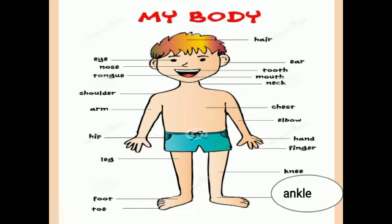This is my head. I have hair on my head. My head is on my neck — N-E-C-K, neck. My neck is on the shoulders — S-H-O-U-L-D-E-R-S. On my face, I have two eyes, two ears, one nose, one mouth, and one chin. Within the mouth, I have one tongue and teeth.